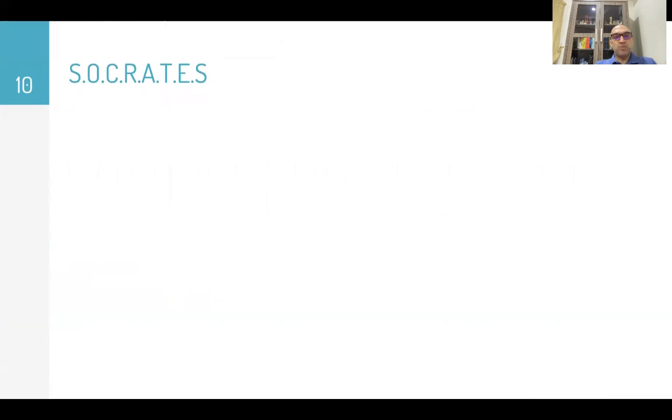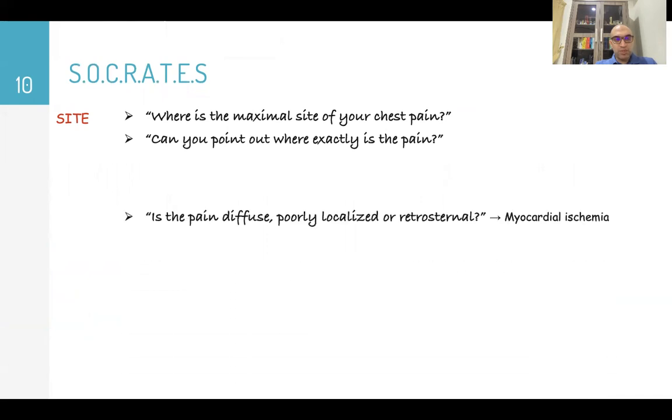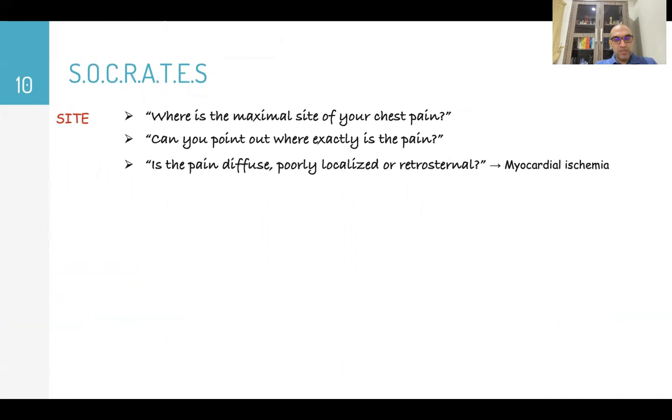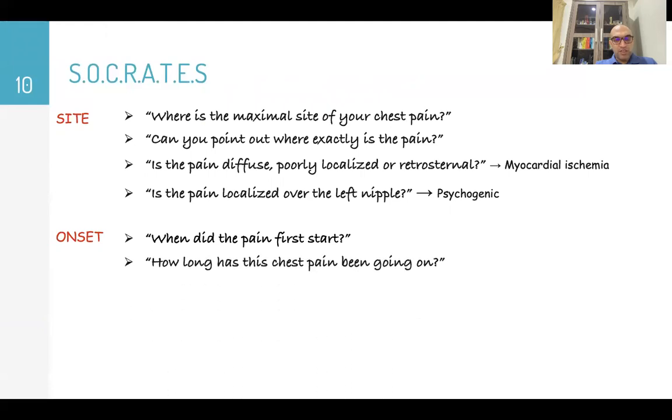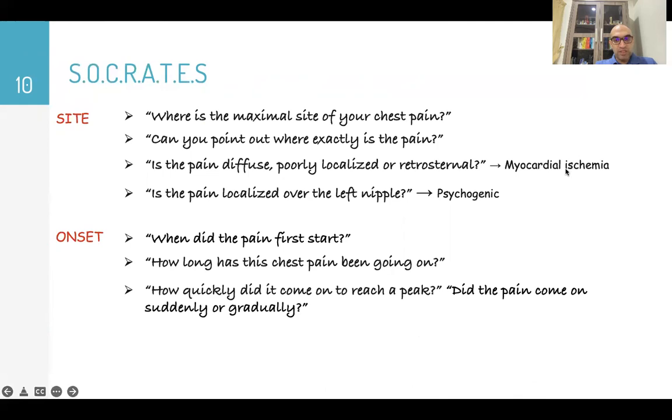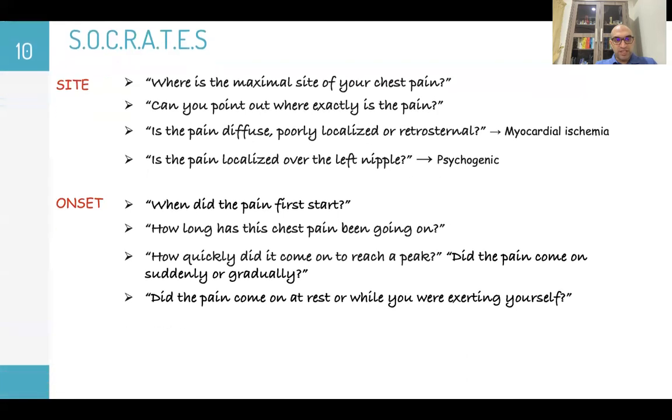Then we'll go for analyzing the complaint itself by Socrates. Start with the site. Where is the maximal site of your chest pain? Can you point out where exactly is the pain? Is the pain diffused, poorly localized, or retrosternal, sometimes in myocardial ischemia? And is the pain localized over the left nipple, which is pointing to psychogenic chest pain? After that, the onset. When did the pain first start? How long has this chest pain been going on? And how quickly did it come on to reach a peak? Did the pain come on suddenly or gradually? Did the pain come on at rest or while you were exerting yourself?